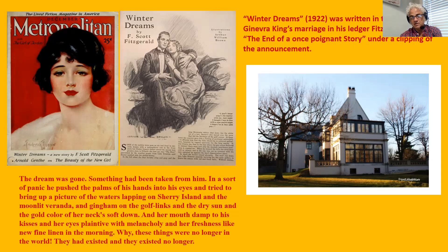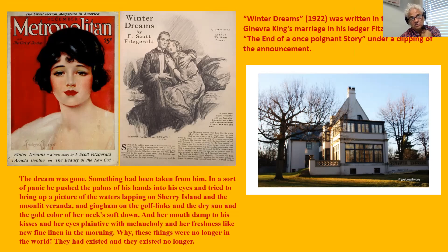Dexter Green does kind of what Jay Gatsby doesn't do — he accepts that you can't repeat the past. Fitzgerald called this story a sort of tryout for Gatsby, in which he's dealing with the theme of a cross-class romance and the hope of being better for it. Imagine if Gatsby went to war, heard Daisy had been married, and heard she was miserable — but didn't try to win her back. That's essentially what we have with 'Winter Dreams.' It's available for free on Project Gutenberg.